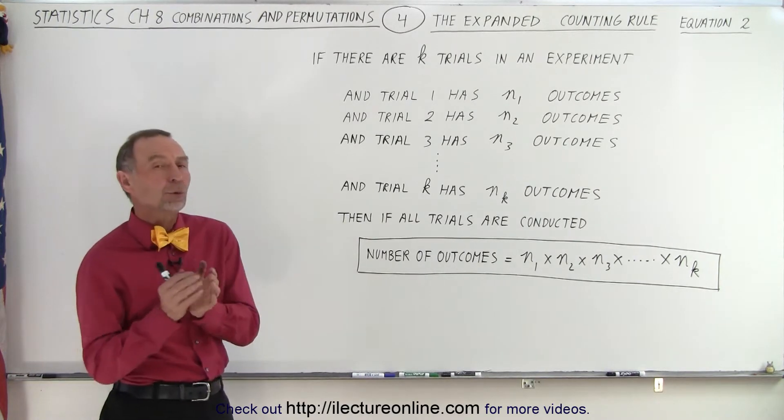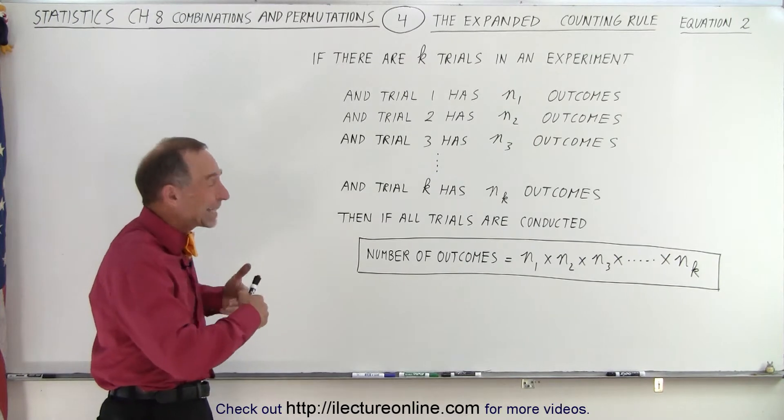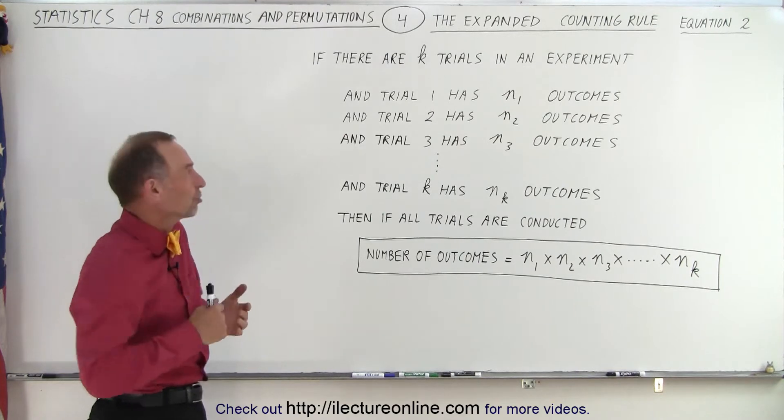The expanded counting rule expands on the fundamental counting rule. Let's say there are k trials, not 2, maybe 3, 4, 5. K can be any number of trials.